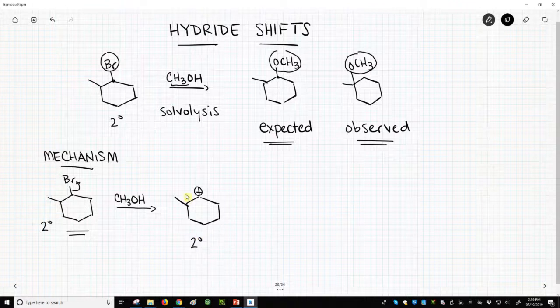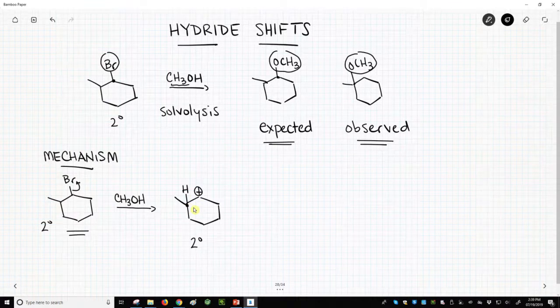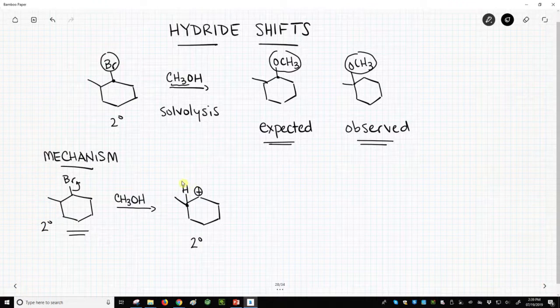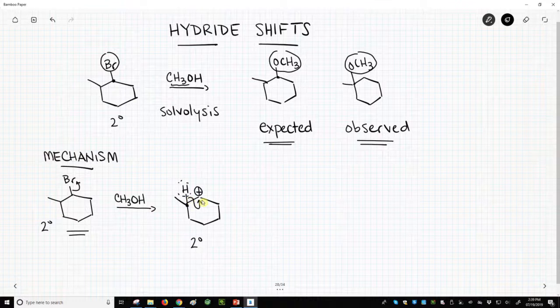As it turns out, however, there is next door a highly substituted carbon, and what can happen in this case is our hydrogen next door can actually jump over with its electrons.